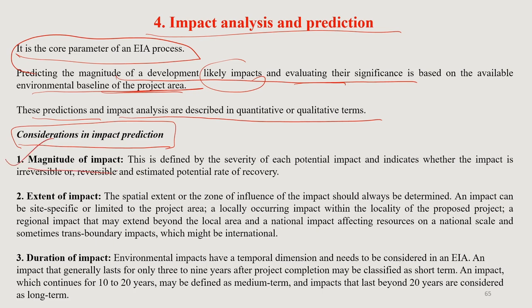First, magnitude of impact — how much the project, if it takes place, can actually impact the local area and environment. This is defined by the severity of each potential impact and indicates whether the impact is irreversible or reversible, and estimates the potential rate of recovery. If an EIA analysis shows that a project will cause irreversible damage, you cannot allow that project to proceed.